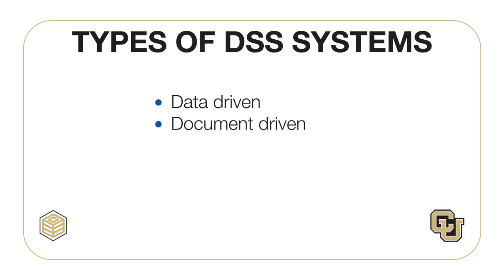Document-driven DSS focuses on unstructured file types like transcripts, documents, videos, sound files, and even images that contain information. A document-driven DSS relies on coding, analysis, search, and retrieval of documents. A knowledge management system like Wikipedia falls into this category.